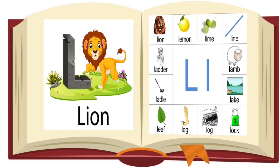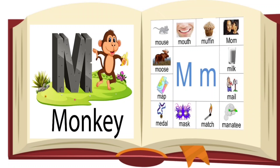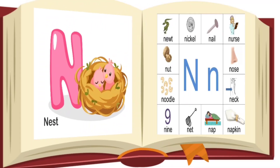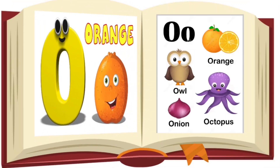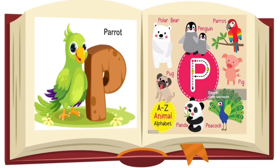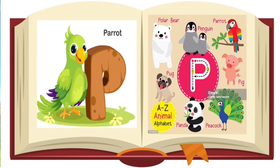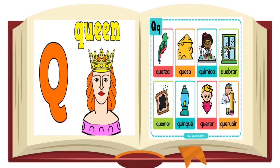L for leg. M for monkey, M for mouse. N for nest, N for nose. O for orange, O for onion. P for parrot, P for peacock. Q for queen.